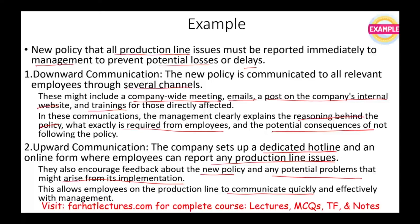The company should also set up dedicated hotlines and online forms where employees can report production line issues — this is upward communication, where frontline people communicate issues to mid and upper-level management. Employees should be encouraged to give feedback on the new policy. Additionally, if there is fraud, theft, or misappropriation occurring, there should be a hotline or 800 number where employees can report anything unusual, illegal, or unethical.